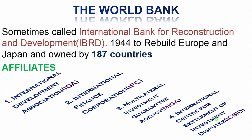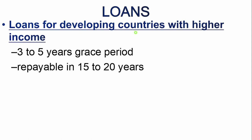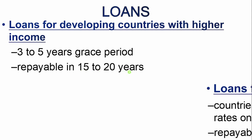Let's look at who the World Bank loans their aid to. First, it loans to developing countries with higher income, giving them a grace period of three to five years, and they are supposed to repay that money in 15 to 20 years. Then we have poor countries — those that cannot afford to pay the market interest rates on loans. They are given a grace period of 10 years, and the repayable period is between 35 to 40 years.